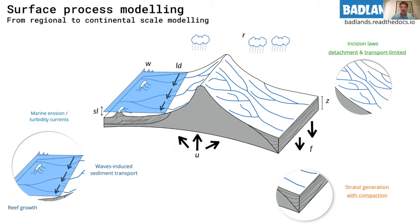The tool has been designed to look at surface processes from regional to continental scale, and over the years the functionality of the tool has been expanded. The main components include the ability to impose different precipitation on different tectonic regimes, incision laws ranging from detachment to transport, and the ability to record stratigraphic architecture for the marine environment. We have also designed functions to simulate carbonate platform generation, wave-induced sediment transport, and gravity-driven submarine currents.